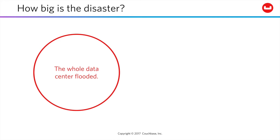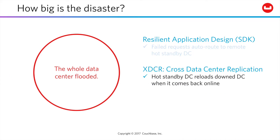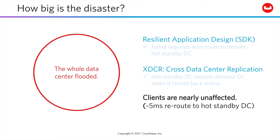Maybe your entire data center flooded in a hurricane. Of course, that never happens — but it happens. With resilient application design, meaning client code ready to reroute on timeout, failed requests are re-executed against your hot standby data center, which is kept ready to roll and as consistent as your network speed. When your downed data center comes back online, two-way XDCR replication begins reloading it, potentially even faster than restoring a backup. Your customers are still virtually unaffected — yes, there will be a slight delay waiting for the timeout from the downed data center and re-request to your hot standby, but that can be configured for as little as 5 milliseconds.